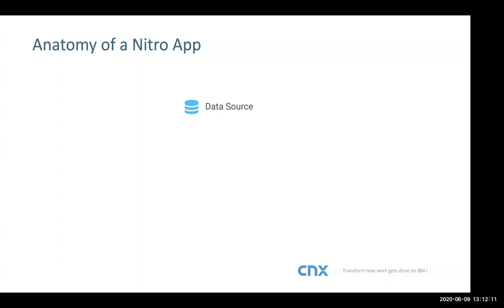Now we're getting into the nuts and bolts — the anatomy of how a Nitro app is created. The bottom part is a data source: we tell the Nitro App Builder where the data comes from. We assume all your tables are already created on your IBMI — we're just telling it how we're accessing that data: are we joining files together, filtering, etc. Once data sources are defined, we attach visual elements called widgets to those data sources. In this example we have a grid widget and a chart attached to the same data source.